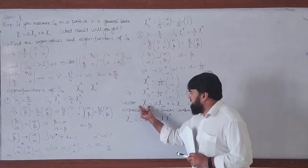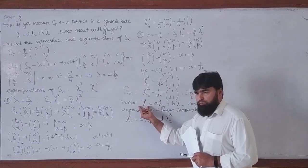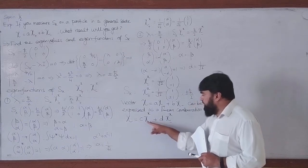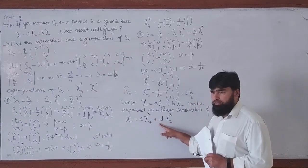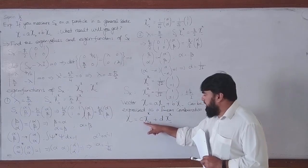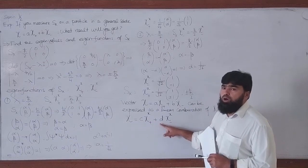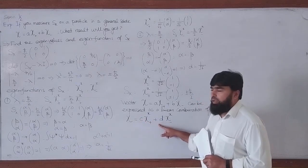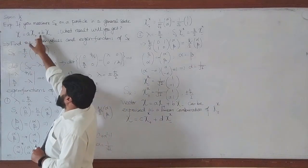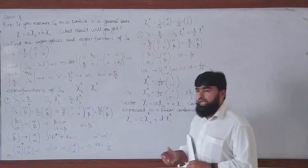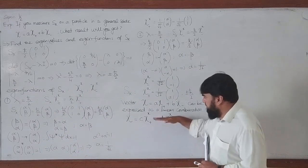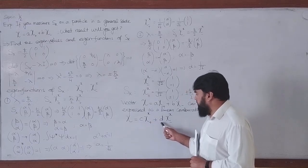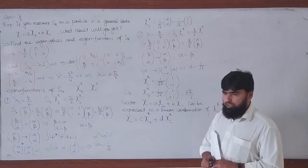We have expressed the same general spin state in terms of chi_plus_x and chi_minus_x. The coefficients are now different — earlier they were A and B; now they are C and D. Our job is to find C and D, which will be expressed in terms of A and B, since A and B are already incorporated in the general state.